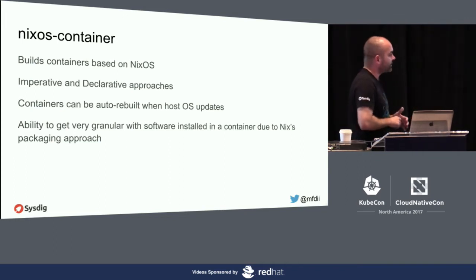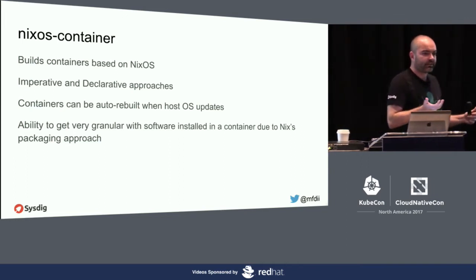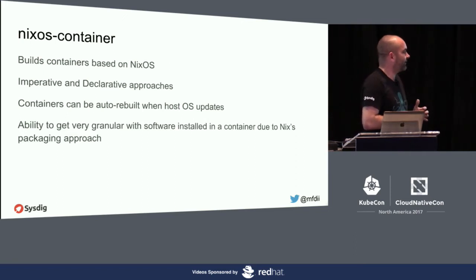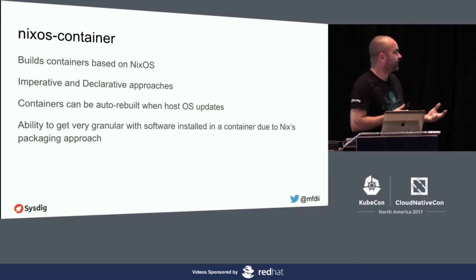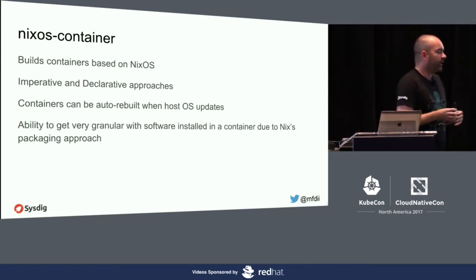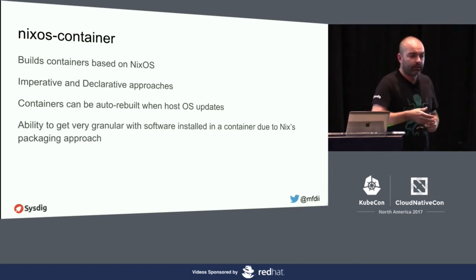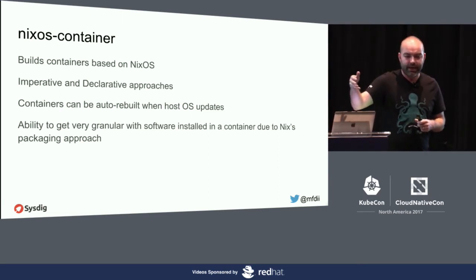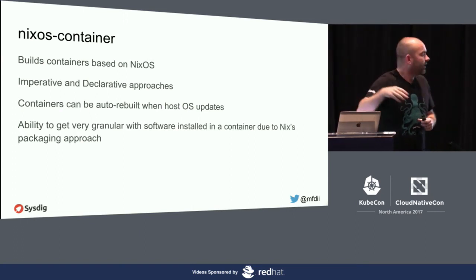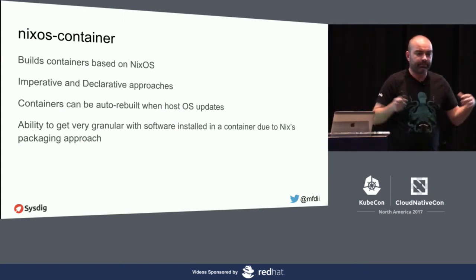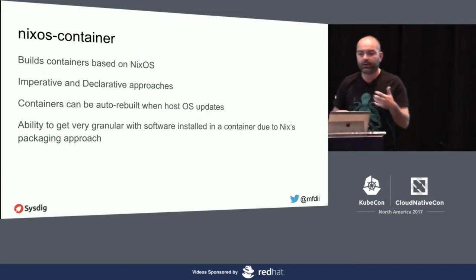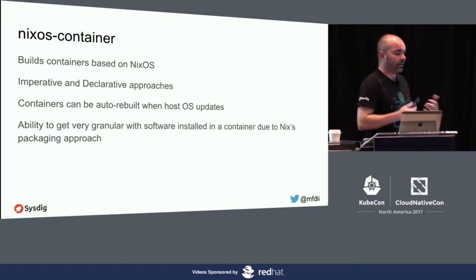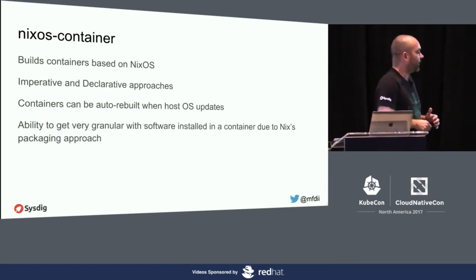NixOS container is interesting. Nix OS is a niche operating system where you can have multiple versions of a package installed — the path is something like /nix/packages with the package name, version, and a build timestamp. So if you want multiple versions of Postgres, Apache, or a library installed, it's very easy, whereas traditionally with RPM and Debian that's been hard.